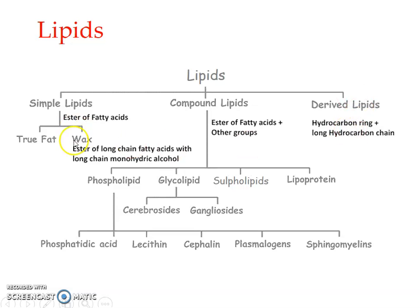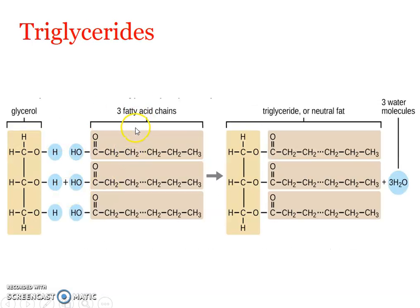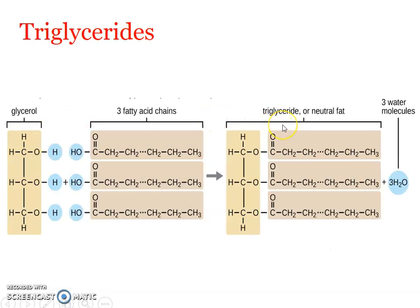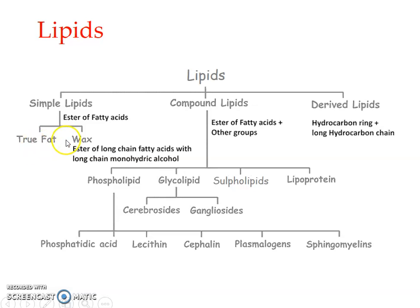Simple lipids are divided into two: the neutral fats (also called true fats) and the waxes. Neutral fat contains glycerides — essentially triglycerides — having a glycerol molecule with fatty acid chains attached to each hydroxyl group. So triglycerides are the neutral fat. Waxes, on the other hand, are esters of long-chain fatty acids with long-chain non-glycerol monohydric alcohols, though they may involve other alcohols instead of glycerol.